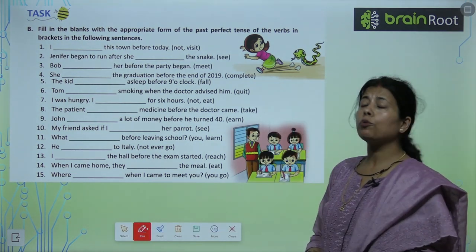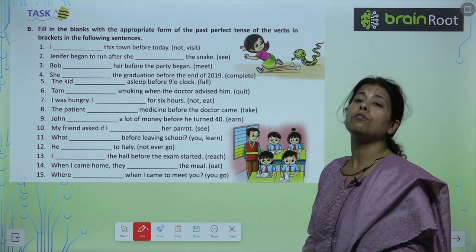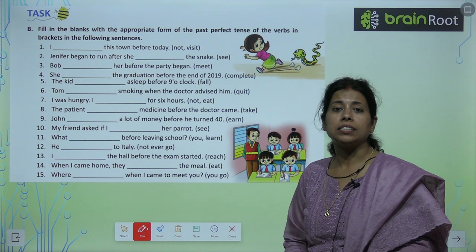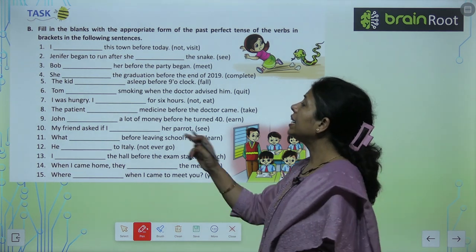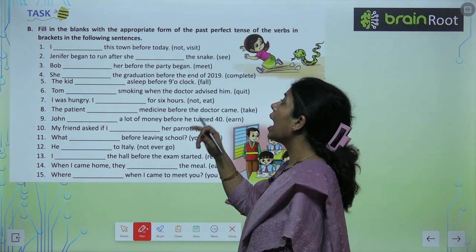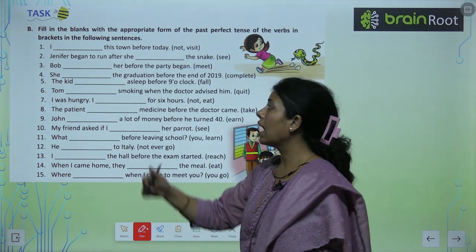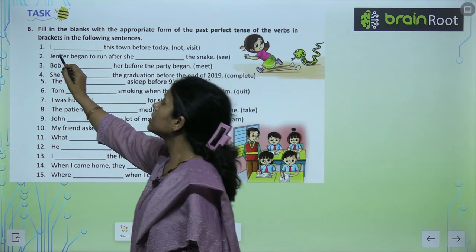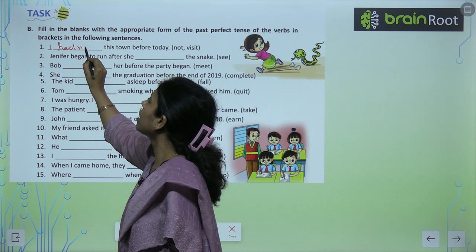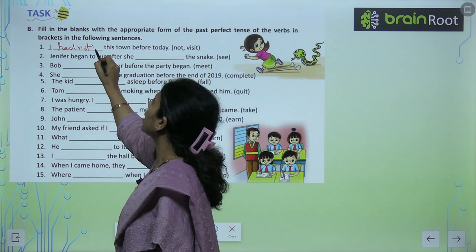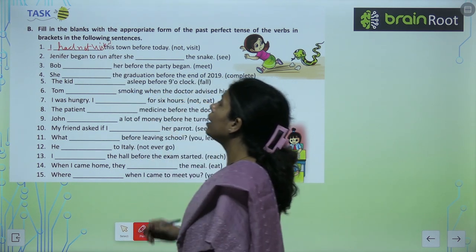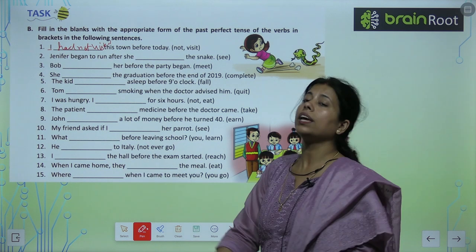Fill in the blanks with the appropriate form of past perfect tense. 'I dash visited this town before today' — negative hai toh aayega: I had not visited this town before today.